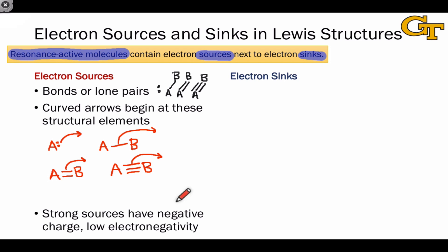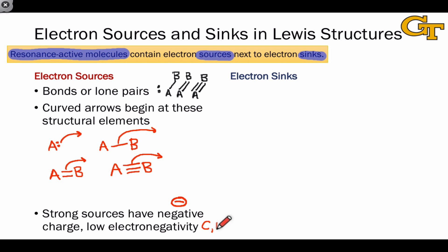Strong electron sources tend to have negative charge, since the donation of electrons away from negatively charged atoms would leave them neutral. They also tend to be associated with atoms of low electronegativity — especially carbon and nitrogen in the non-metals — since these elements don't hold on to their electrons very tightly and thus can donate their electrons more easily.